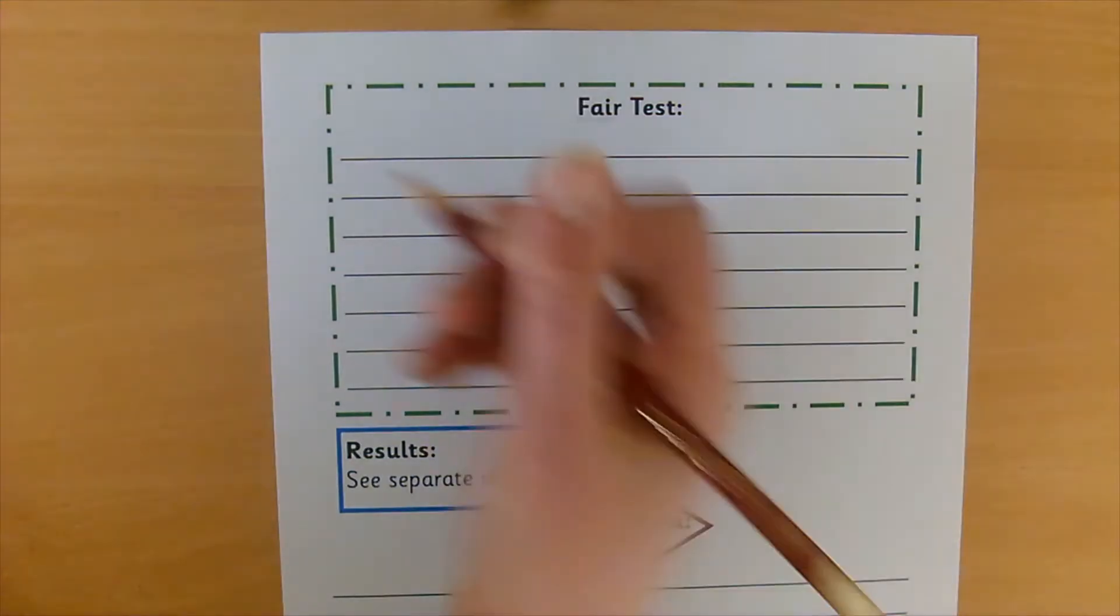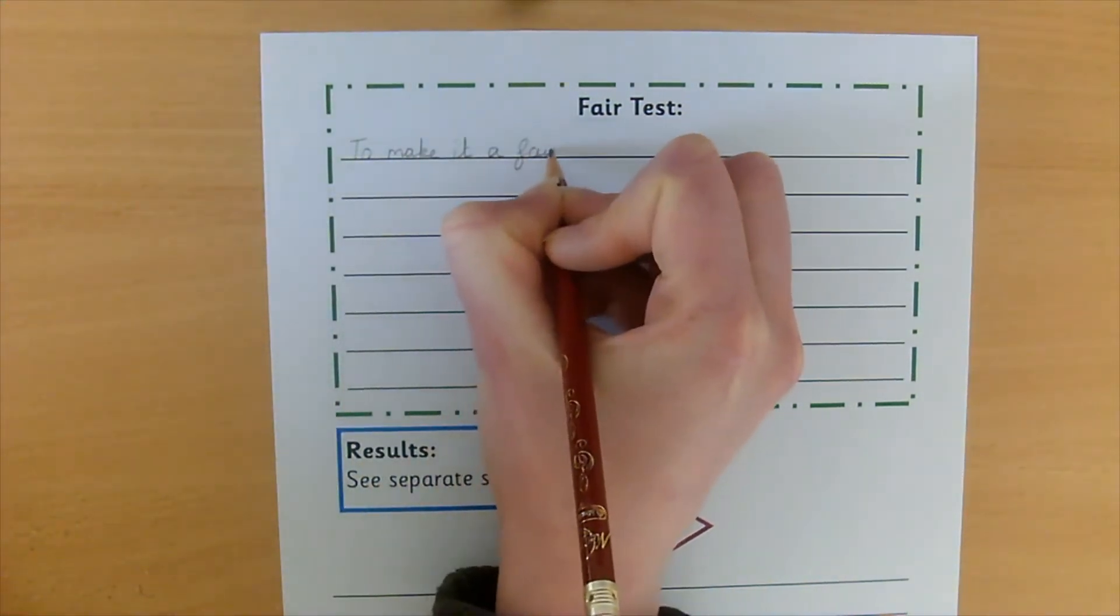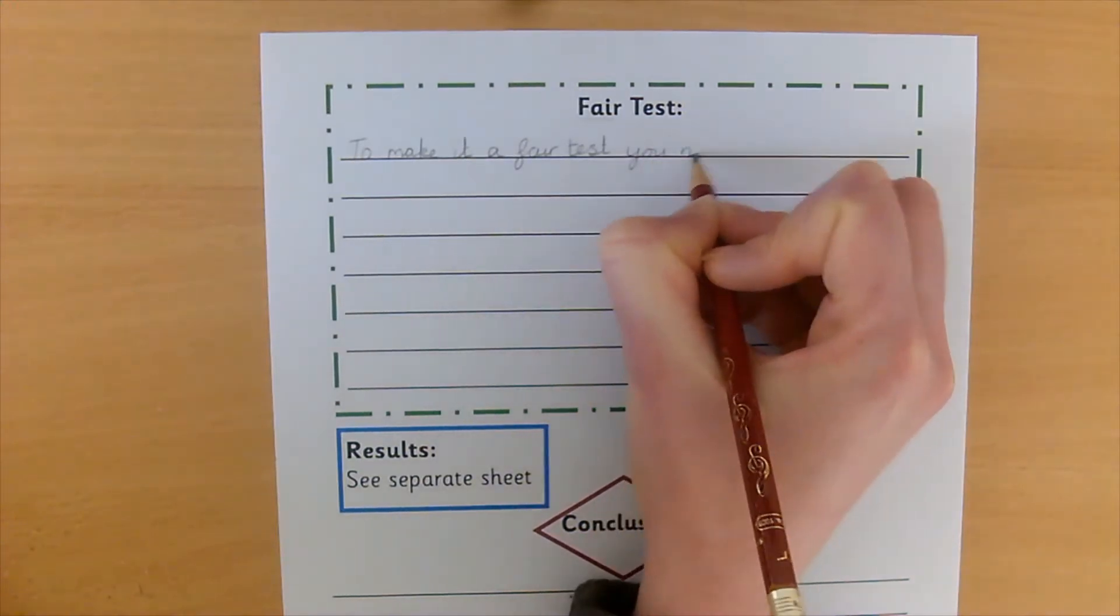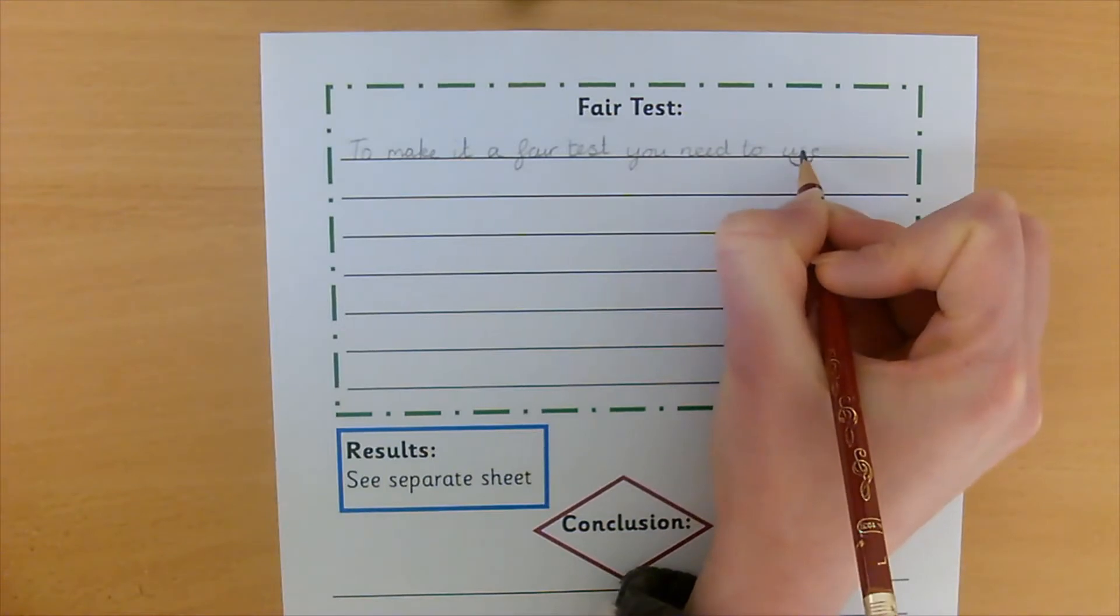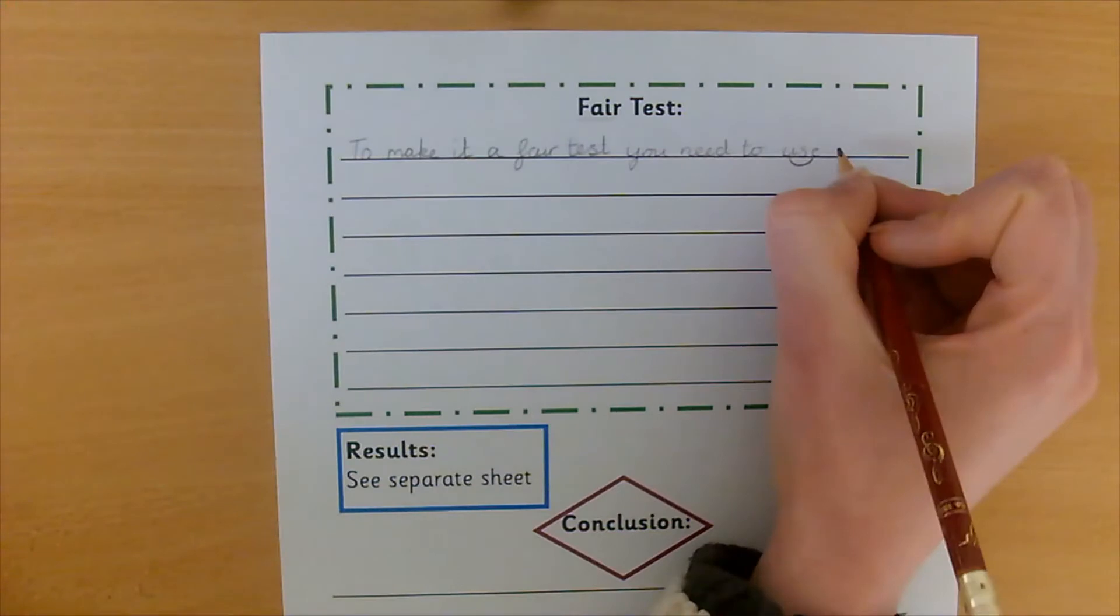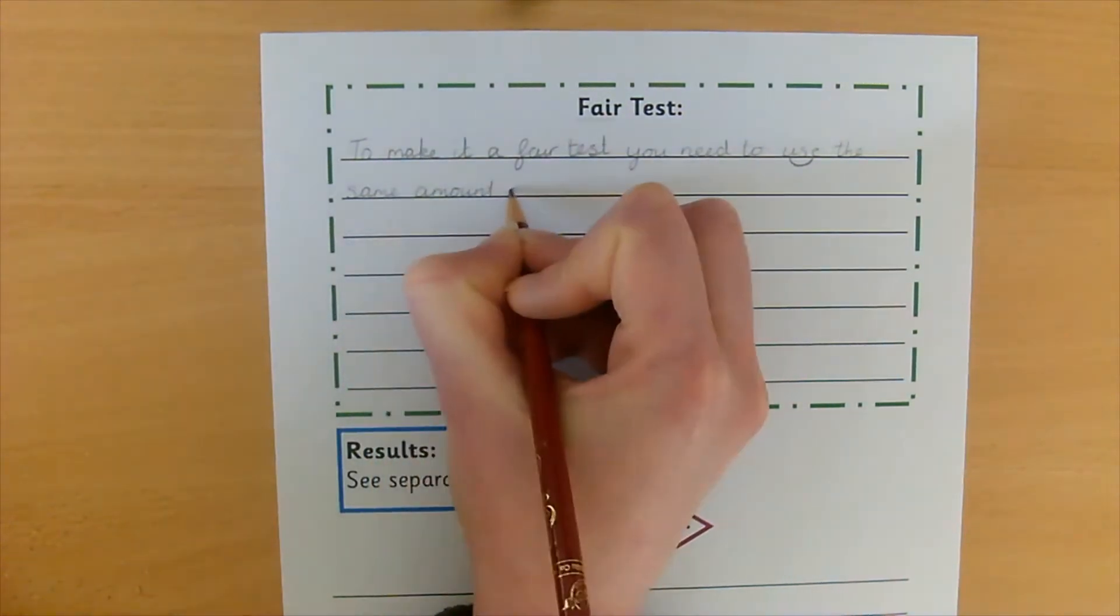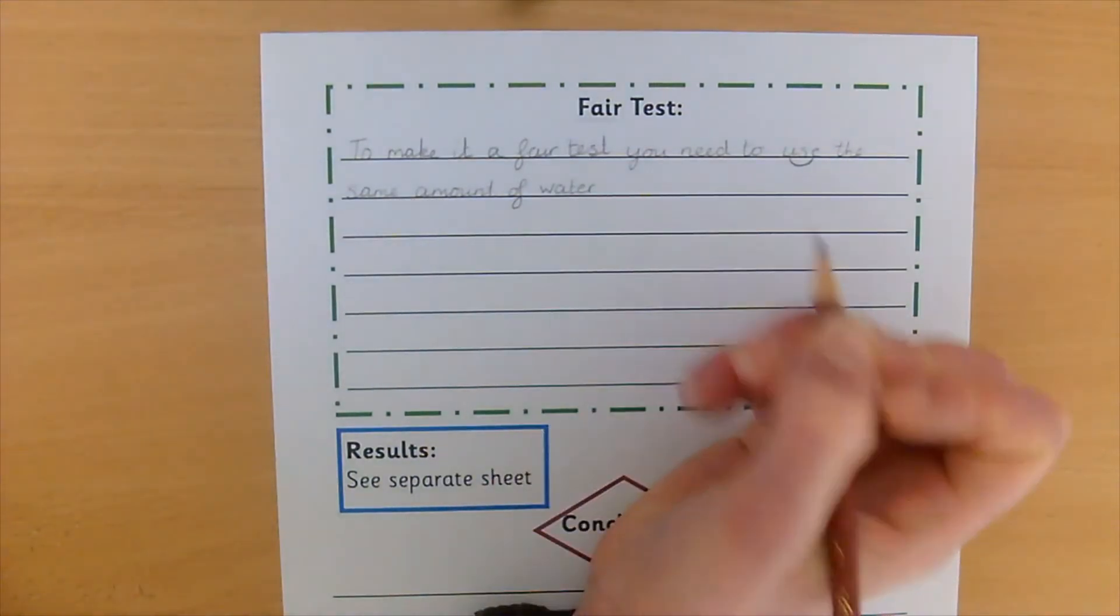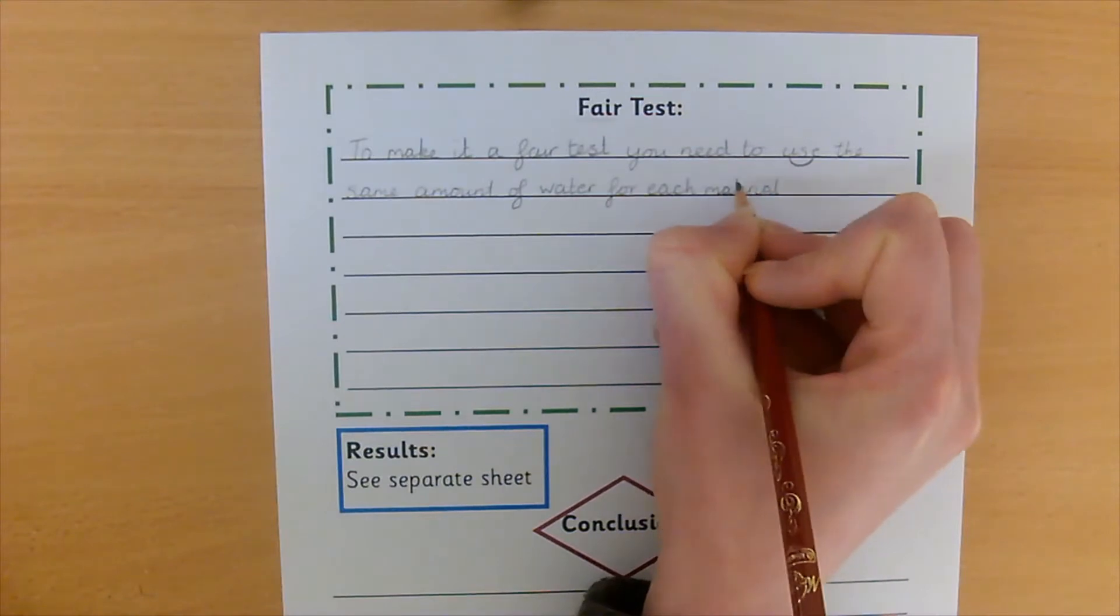So we can put this into a sentence. To make it a fair test, you need to use. Now use is a word that lots of you find tricky. Use is a split spelling you use. It doesn't start with the letter Y. To make it a fair test, you need to use the same amount of water. That's a year two word. Let's make sure we spell that correctly. The same amount of water for each material. Full stop.